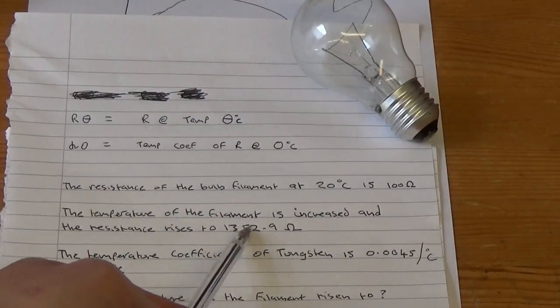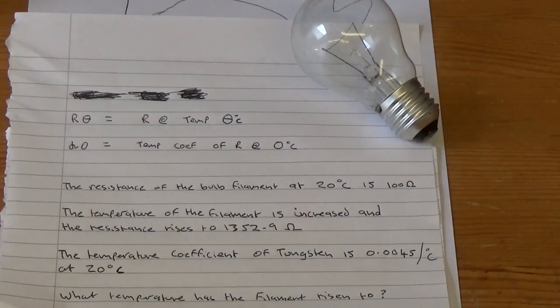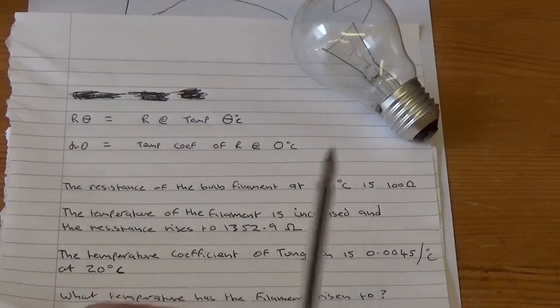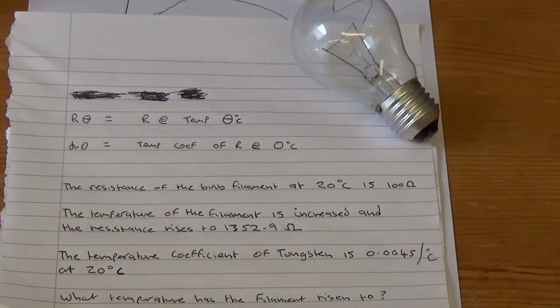And the temperature of the filament is increased and the resistance rises to 1352.9, if you remember, that's what he was actually getting through his calculation from the actual rated 40 watts after applying Ohm's law. And the temperature coefficient of tungsten is 0.0045 per degree C. I actually got that number from one of my books so I assume it's correct. And what we need to know is what the temperature of the filament risen to.